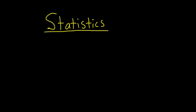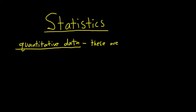So the first definition is that of quantitative data. The word quantity is hidden in the word quantitative. So that means these are numbers. If it's a number, it's quantitative.